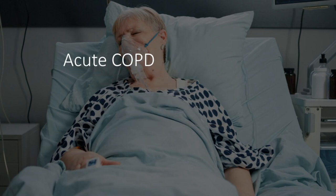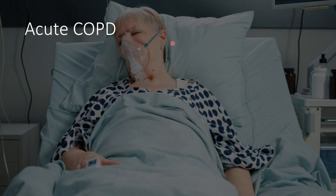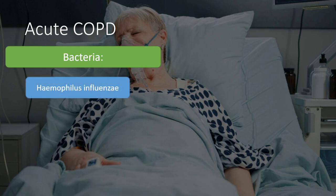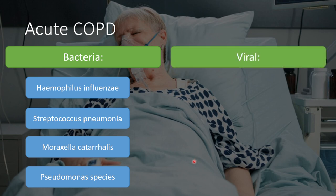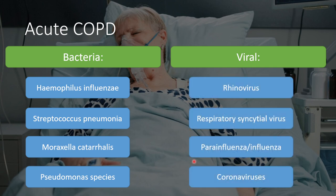Acute COPD generally affects older patients. Causes are usually infection on top of COPD, unlike asthma where an allergen is the trigger. Bacterial causes most commonly include Haemophilus influenzae, Streptococcus pneumoniae, Moraxella catarrhalis, and Pseudomonas — Pseudomonas species are usually antibiotic-resistant and common in patients with severe COPD or other comorbidities. Viral causes include rhinovirus, respiratory syncytial virus, influenza, and coronaviruses.